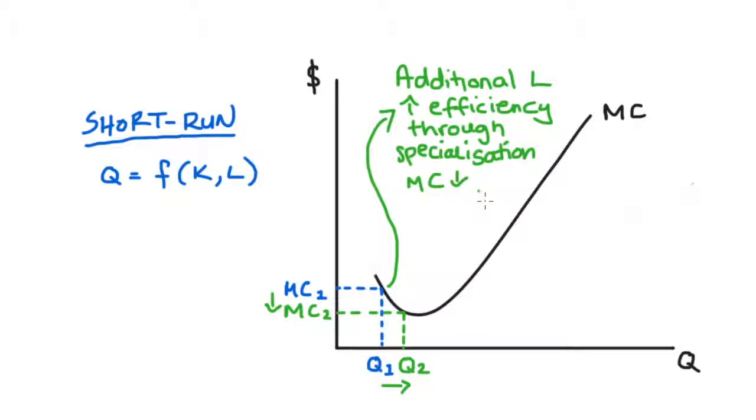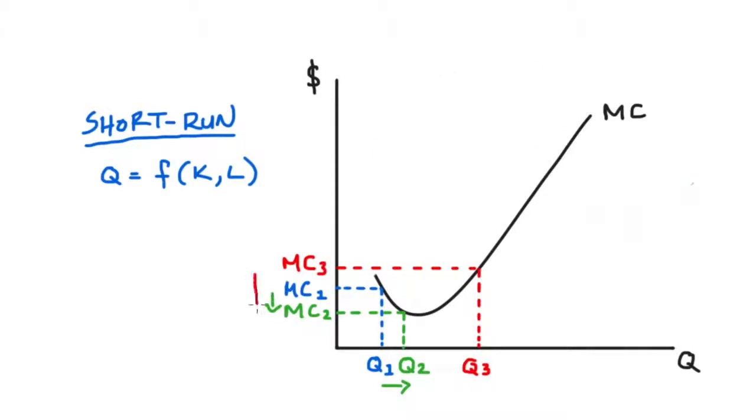Of course though, eventually, because of our capacity constraint, because our capital is fixed, it actually, after some point, gets very hard to increase our production when we're only just adding labor. So let's say I wanted to increase my level of production again to a level like Q3.